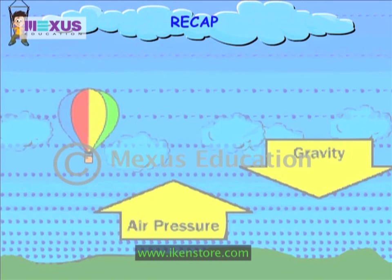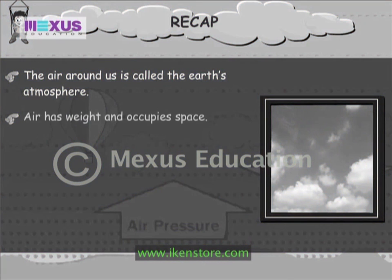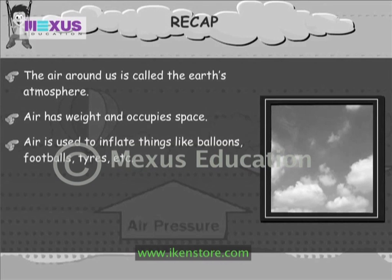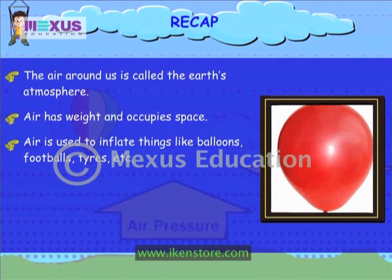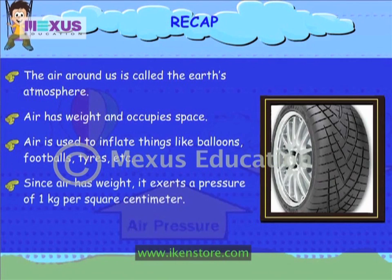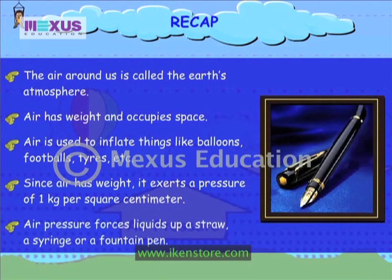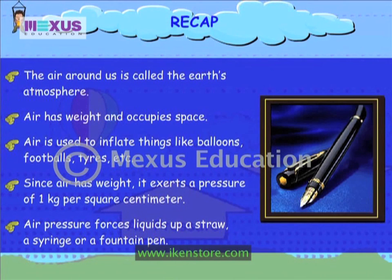Let us do a quick recap. The air around us is called the earth's atmosphere. Air has weight and occupies space. Air is used to inflate things like balloons, footballs, and tyres. Since air has weight, it exerts a pressure of 1 kg per square centimetre. Air pressure forces liquid up a straw, a syringe, or a fountain pen.